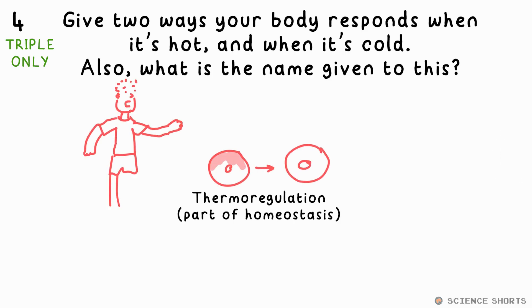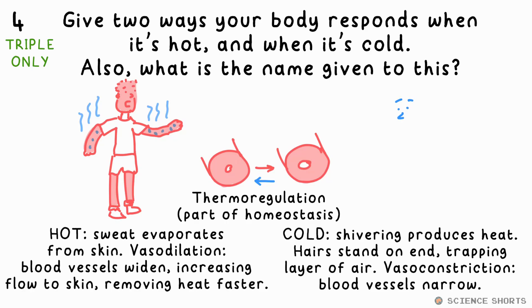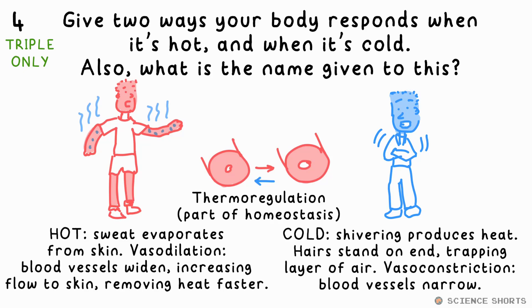The ability for your body to control its internal temperature is called thermoregulation — it's an example of homeostasis. When hot, sweat glands produce sweat which evaporates from the surface of your skin. Your blood vessels also dilate — they get wider — increasing blood flow to your skin, allowing heat to be lost at a greater rate. When cold, vasoconstriction occurs: the blood vessels get thinner, reducing blood flow and therefore the rate of heat loss. Also, your hairs stand on end, trapping an insulating layer of air between them and your skin. You could have also said shivering, which causes your muscles to produce more heat.